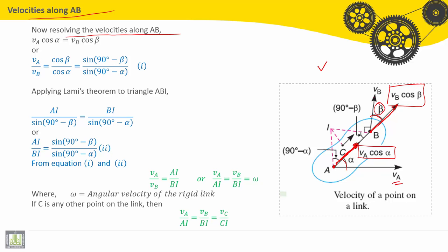And here the angle alpha. These should be equal: V_A cosine alpha should equal V_B cosine beta. Why? Because there's no relative motion between A and B, they move together. Here we can find V_A divided by V_B.